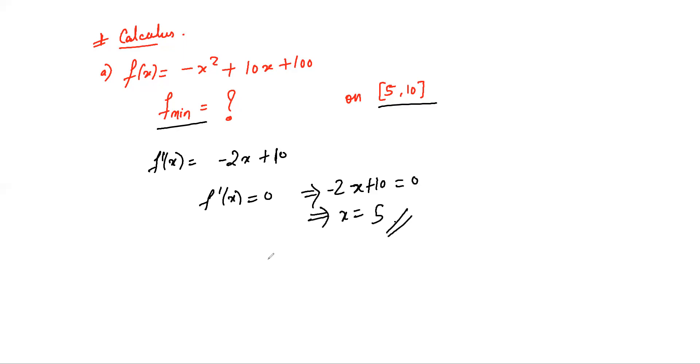So 5 is a critical point. Now we also need to check the value of f at the boundary points. So we check the value of f at x = 5 and x = 10. We calculate the values and compare them, and whichever value is minimum will be our answer.